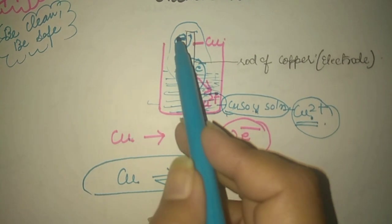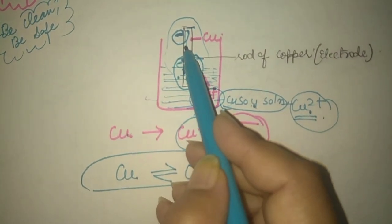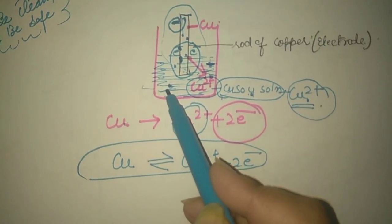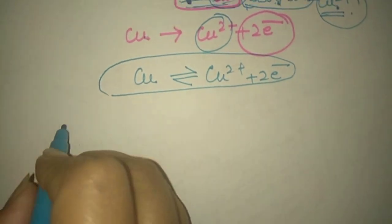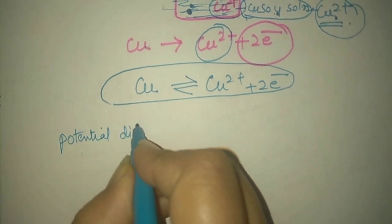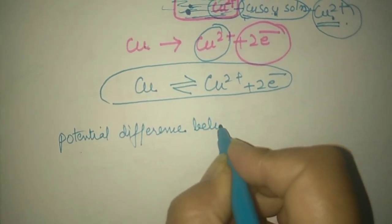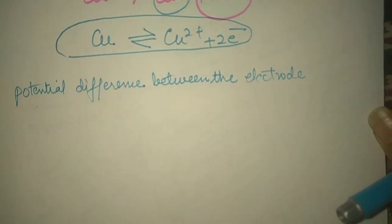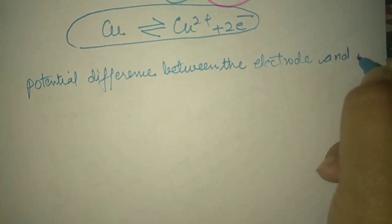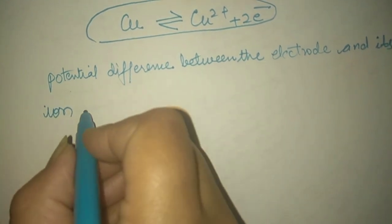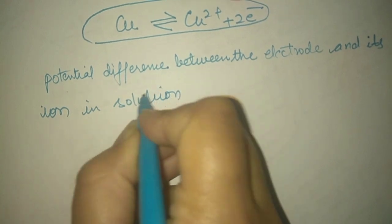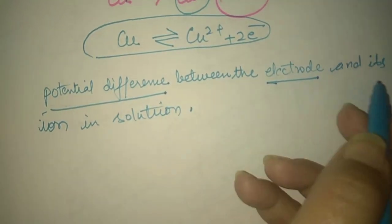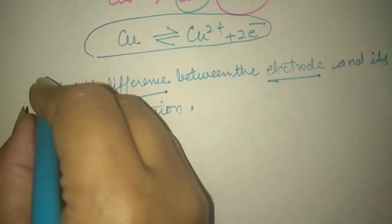This leads to a potential difference between the metal electrode and the ions present in the solution. Here, the ions are present in the solution; this is the metal and here are the metal ions. Therefore, the potential difference between the electrode — here we have taken an electrode of copper — and its ions, which are Cu2+ in solution, that is in the electrolyte solution, is known as electrode potential.